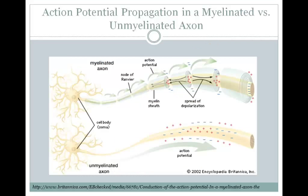We can compare action potential propagation in a myelinated versus an unmyelinated axon. In the unmyelinated axon, each little patch of membrane must be brought to threshold and an action potential must occur before bringing the next patch of membrane, and so on.